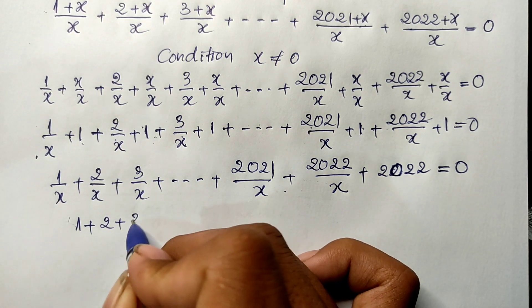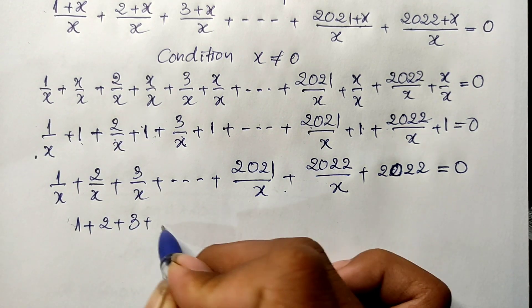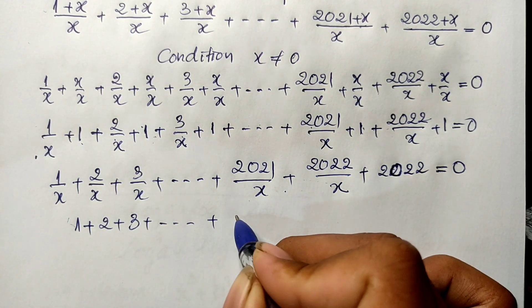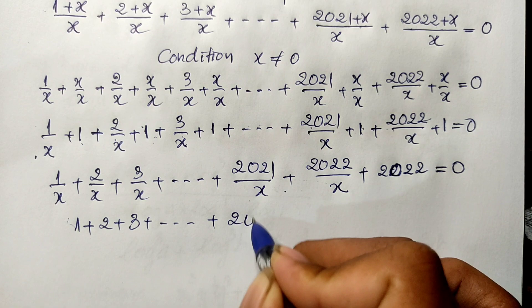Taking the common denominator h, I get: (1 plus 2 plus 3 plus ... plus 2^21 plus 2^22) divided by h, plus 2^22, equal 0.